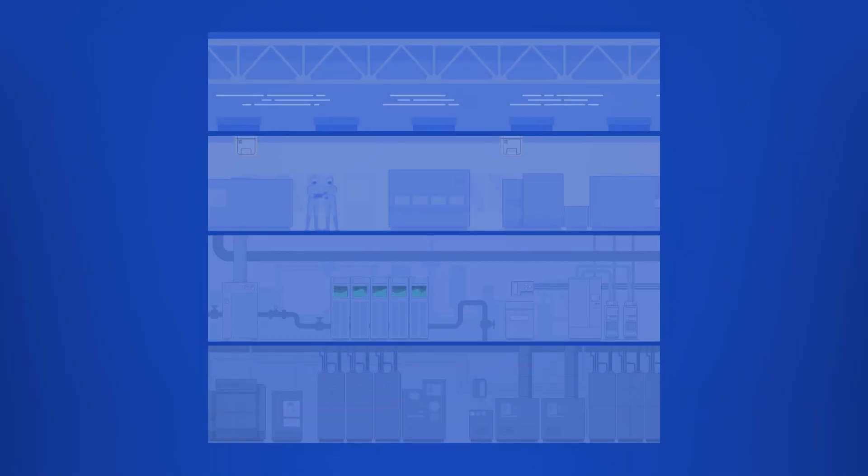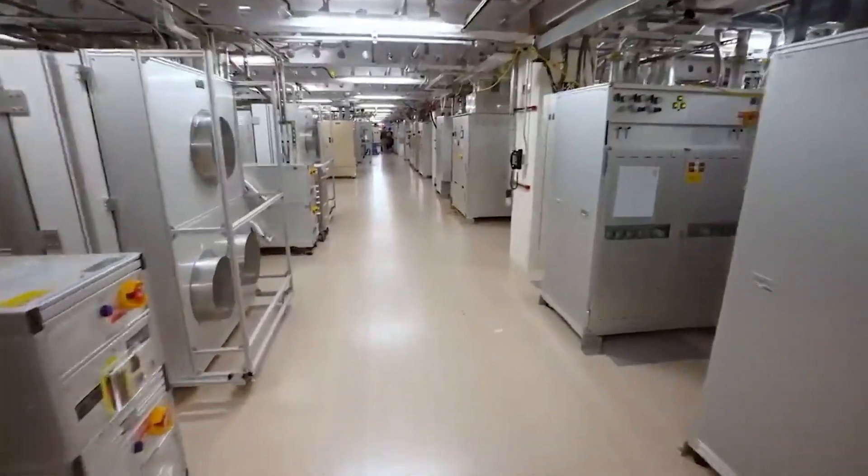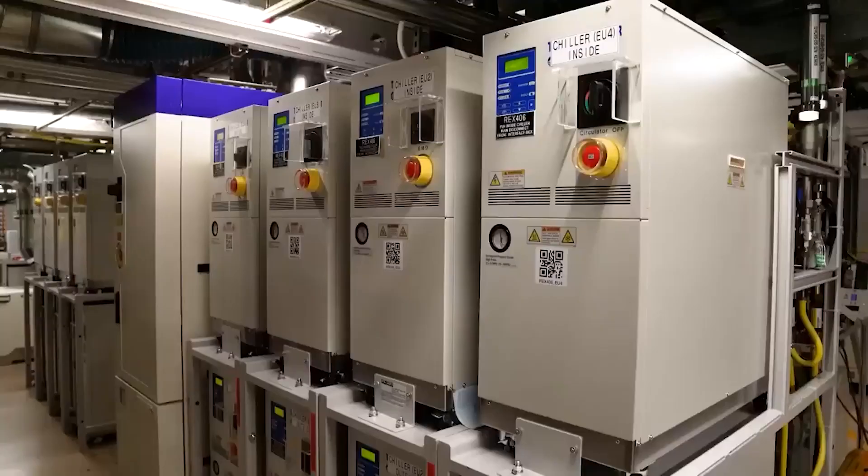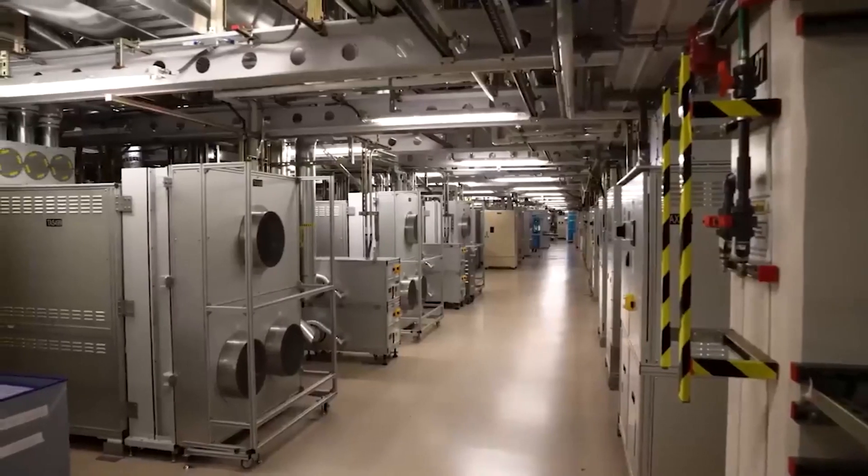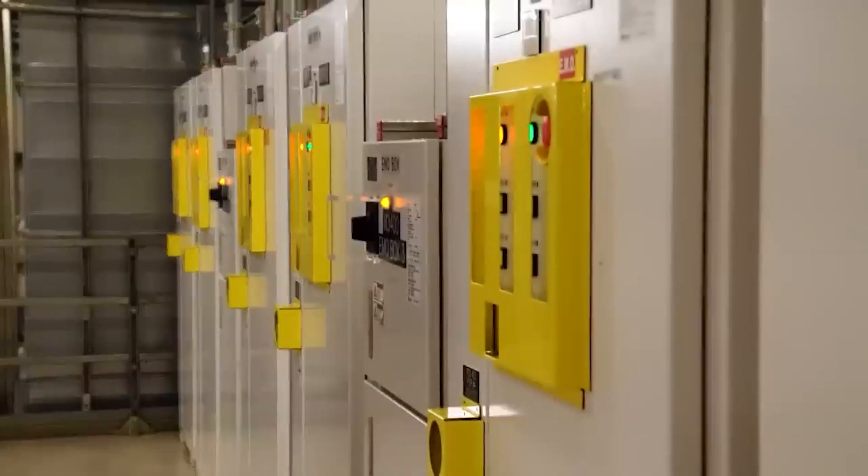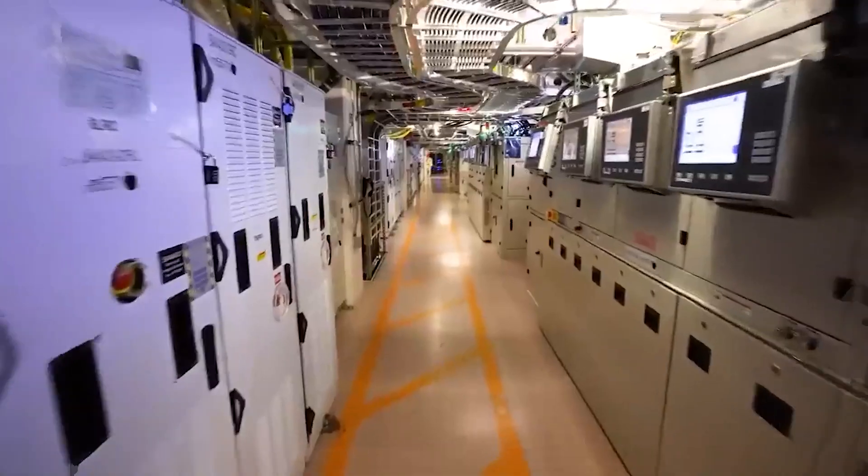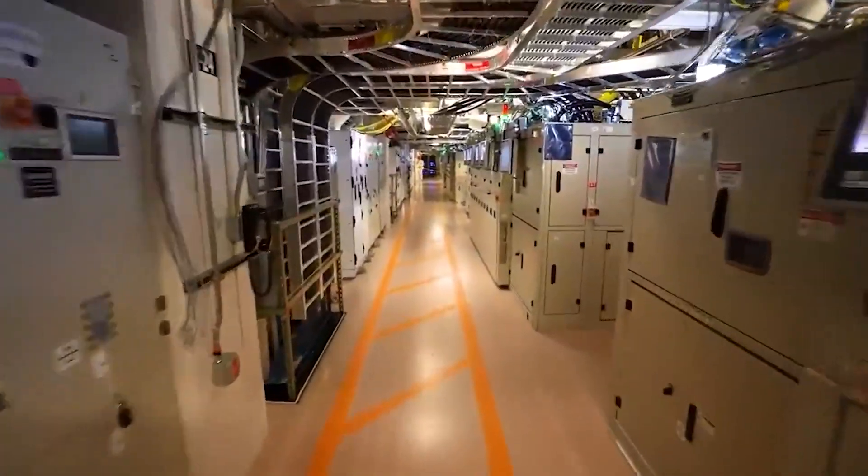Beneath the clean room is the sub-fab level. Here, thousands of pieces of equipment such as chillers, pumps, heat exchangers, transformers, power cabinets, treatment systems, and other systems support clean room operations.